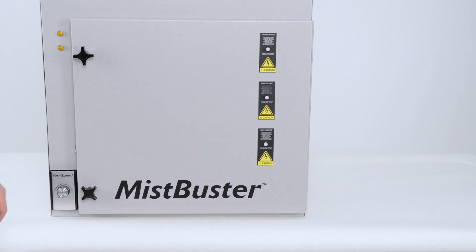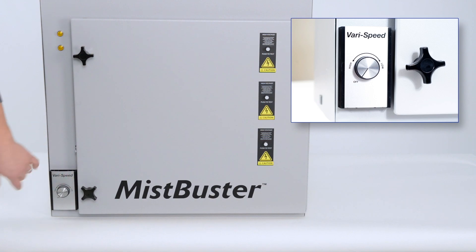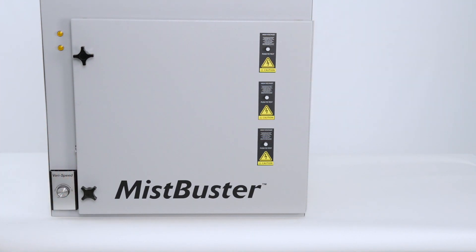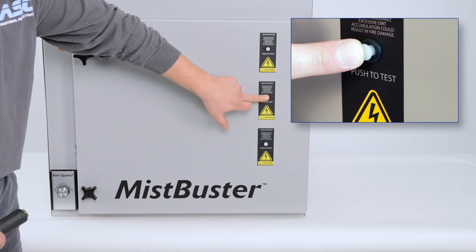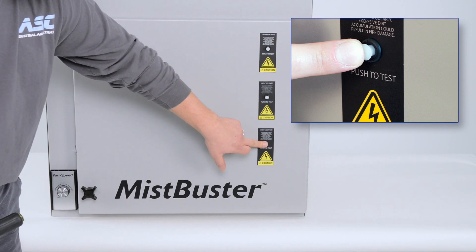The first thing you do is turn the vario speed control to the off position. The next thing you are going to do is push in the high voltage ground which grounds out the cells.